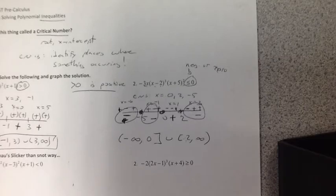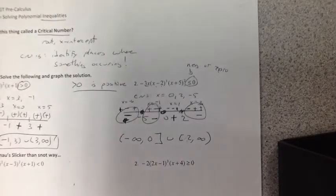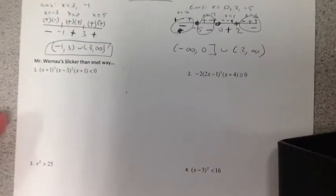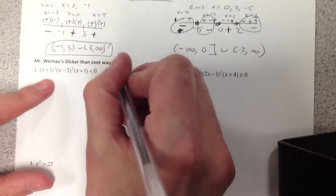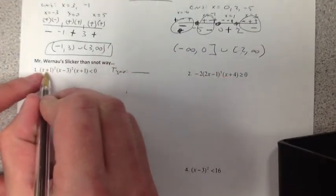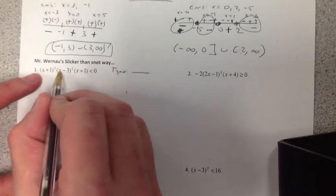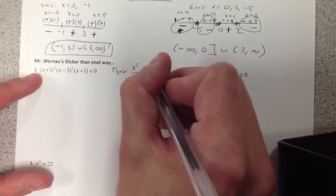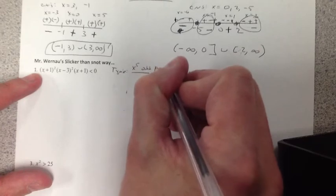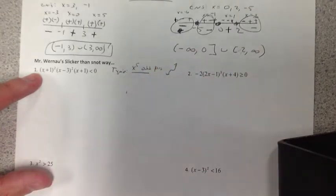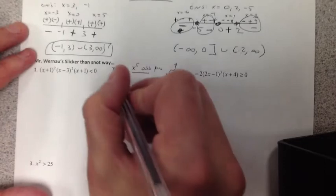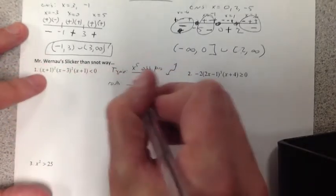We're a little bit older and more mature than that at this point, hopefully. So I am going to show you Mr. Wernow's slicker than snot way of doing this. And it's all about knowing how to do polynomials. This is a polynomial. If I know its type, watch what I can do here. This is 1, 2, 3, 4, 5. This is x to the 5th. It's odd positive. I know what odd positives look like. What are my roots? Easy breezy.